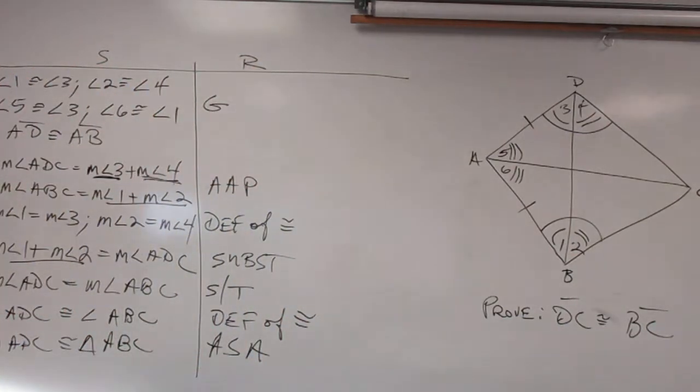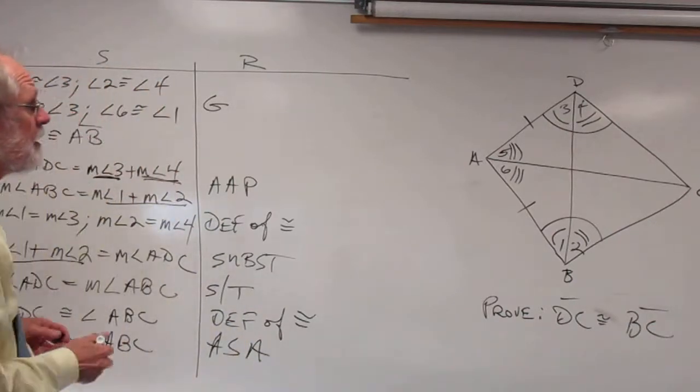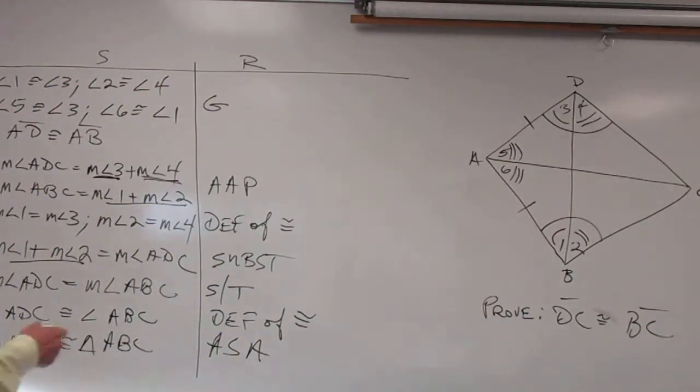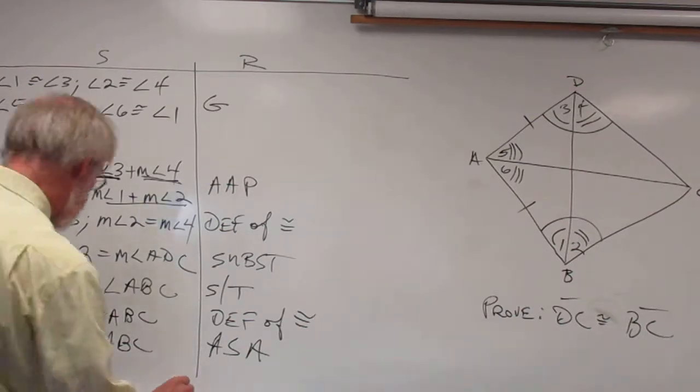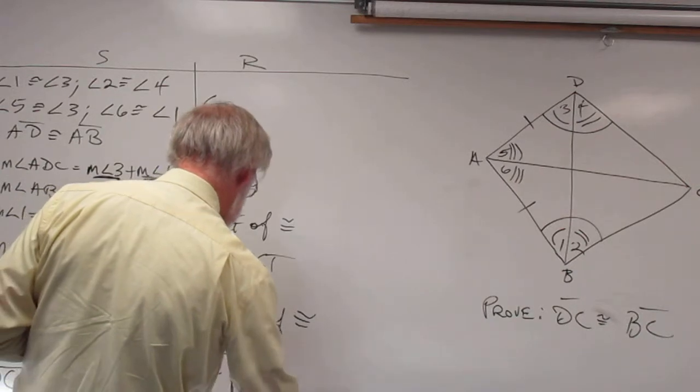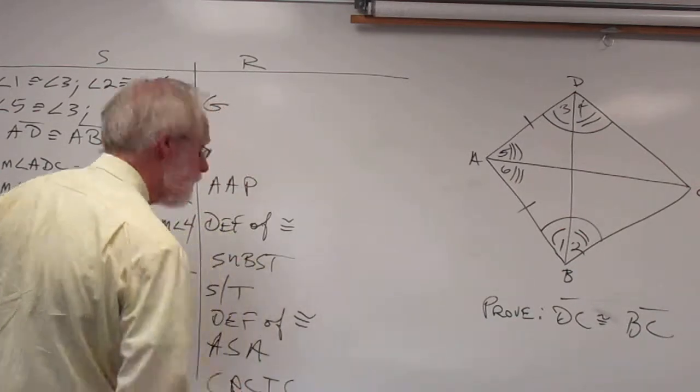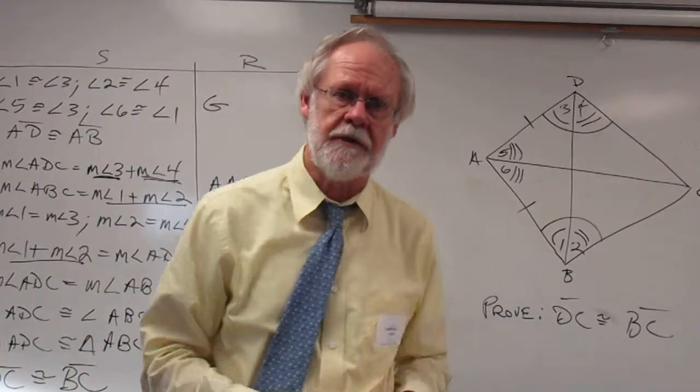And now the last step here, if you can see this down here, I will put it at the bottom, is DC is congruent to BC, and the reason for that is CPCTC. Okay, that concludes the proof. Thank you.